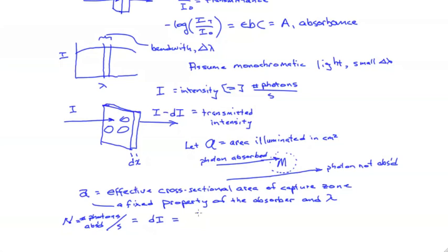That probability ought to increase as the ratio of the capture zone compared to the illuminated area increases. It also ought to be proportional to the number of absorbers in our thin section.